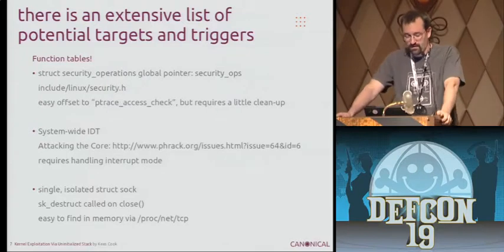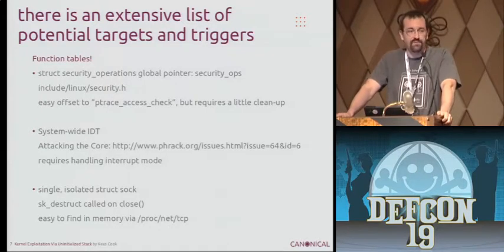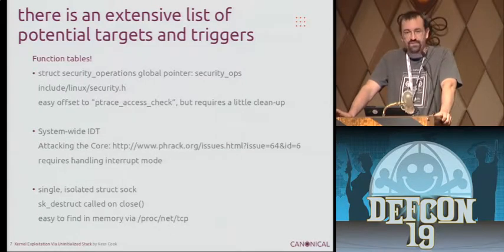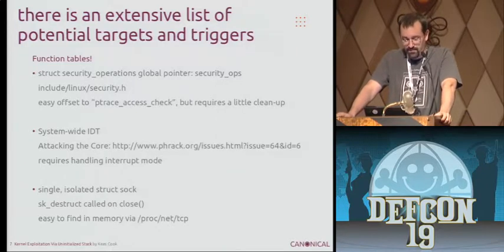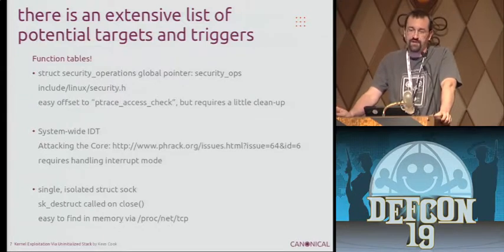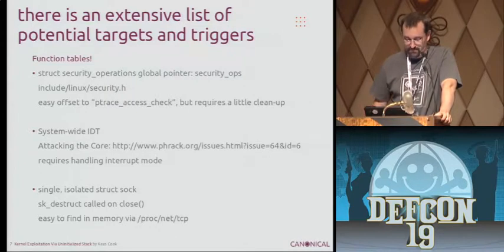Function tables are great for that because they're just lists of functions — if you can find a way to trigger that function, then you have managed to trick the kernel into running your code. One of the first ones I played with was security_ops, since I was familiar with the Linux security module interfaces. That's basically for SELinux, AppArmor, and other LSMs that use the security_ops function table for high-level actions. I like replacing the ptrace access check because it was near the top and didn't require too much cleanup. There's also the IDT — there's a good Phrack article on that. But my favorite at this point is using a single sock struct — if you can create a socket, you've got a destructor when the socket goes away, and if you can overwrite that function, when you close the specific socket it'll run the code you wanted.